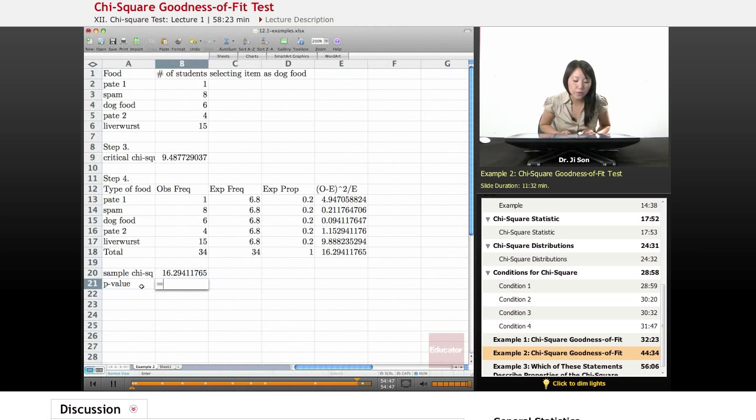In order to find p-value, I could use chi-dist. Here I put in my chi-square and my degrees of freedom, which is 4. And so that's 0.003, and that is certainly smaller than 0.05. And so in step five, we reject the null.